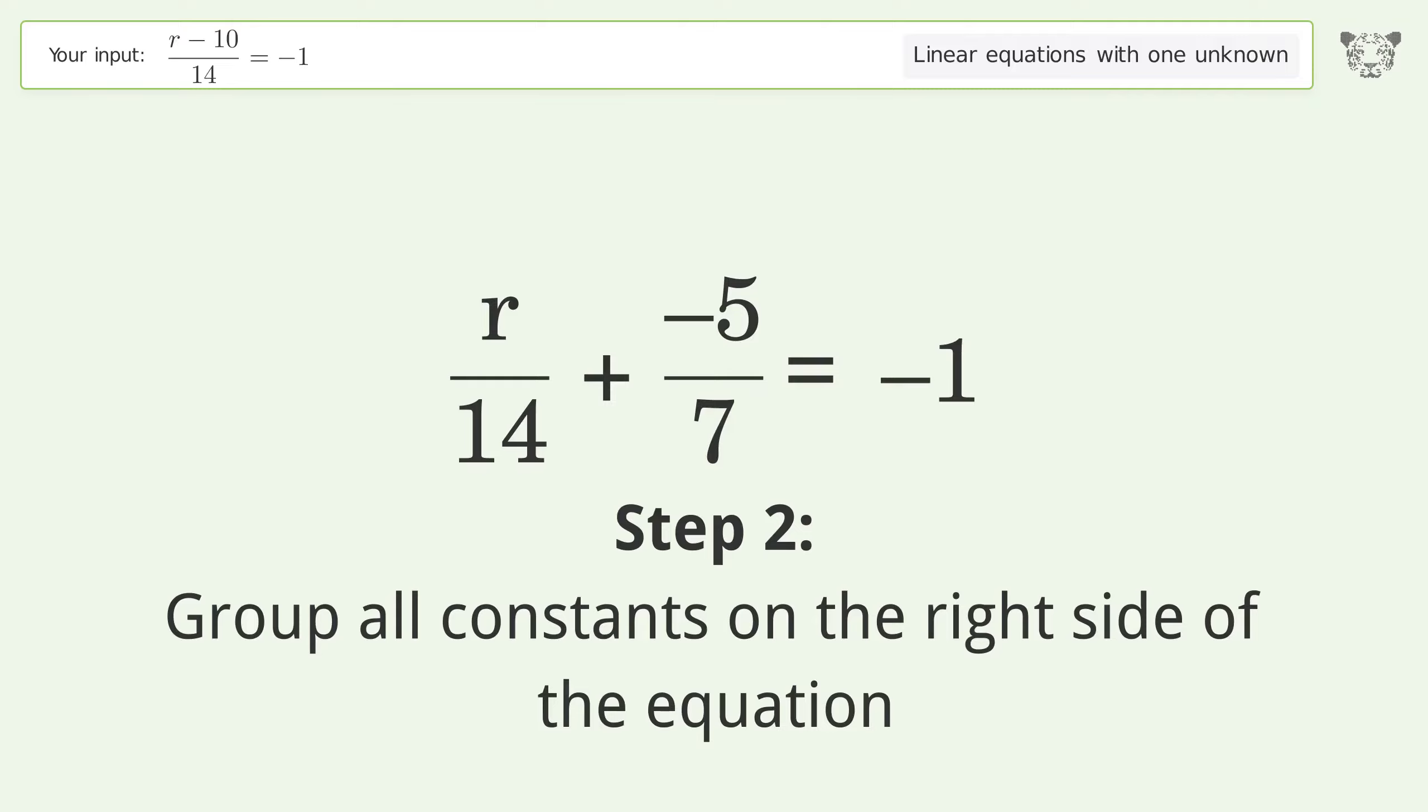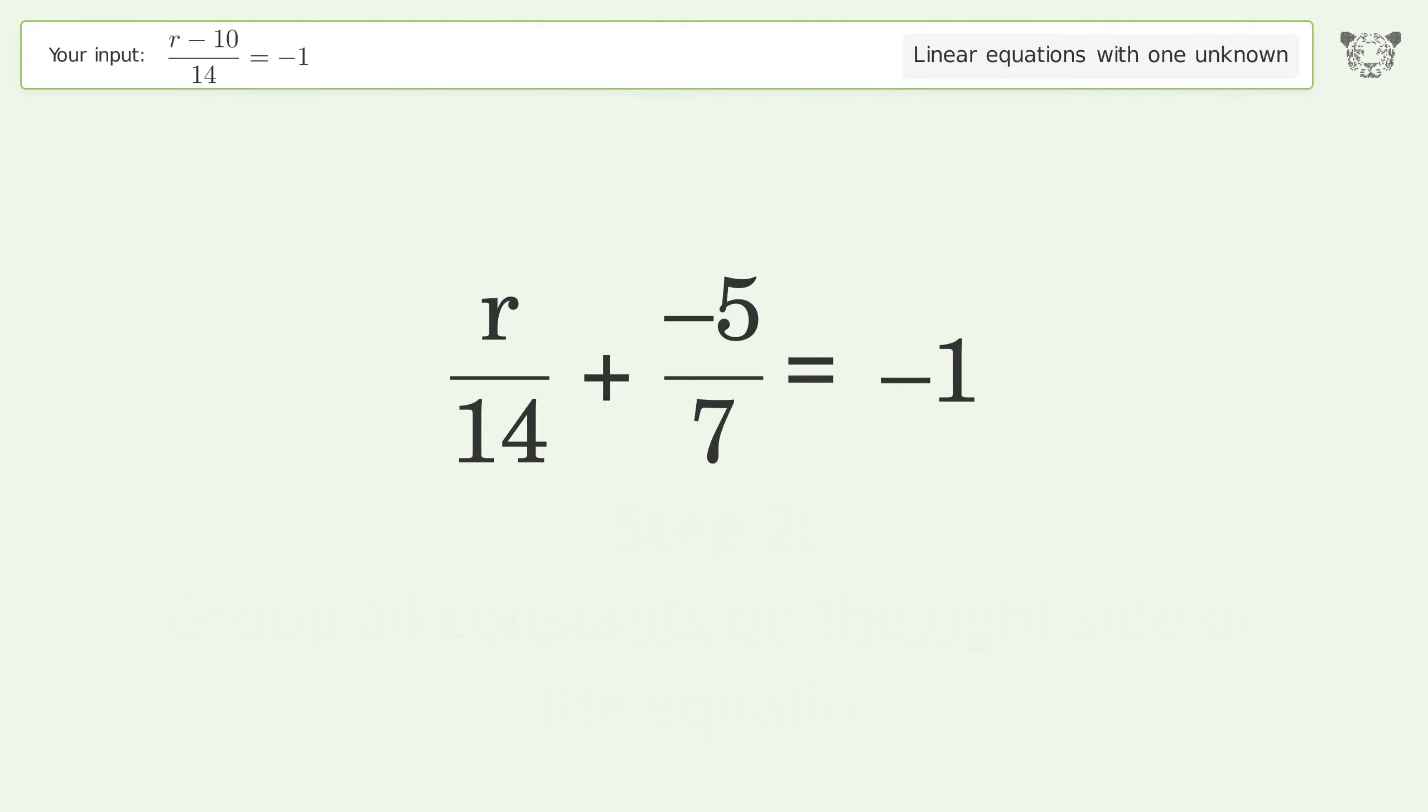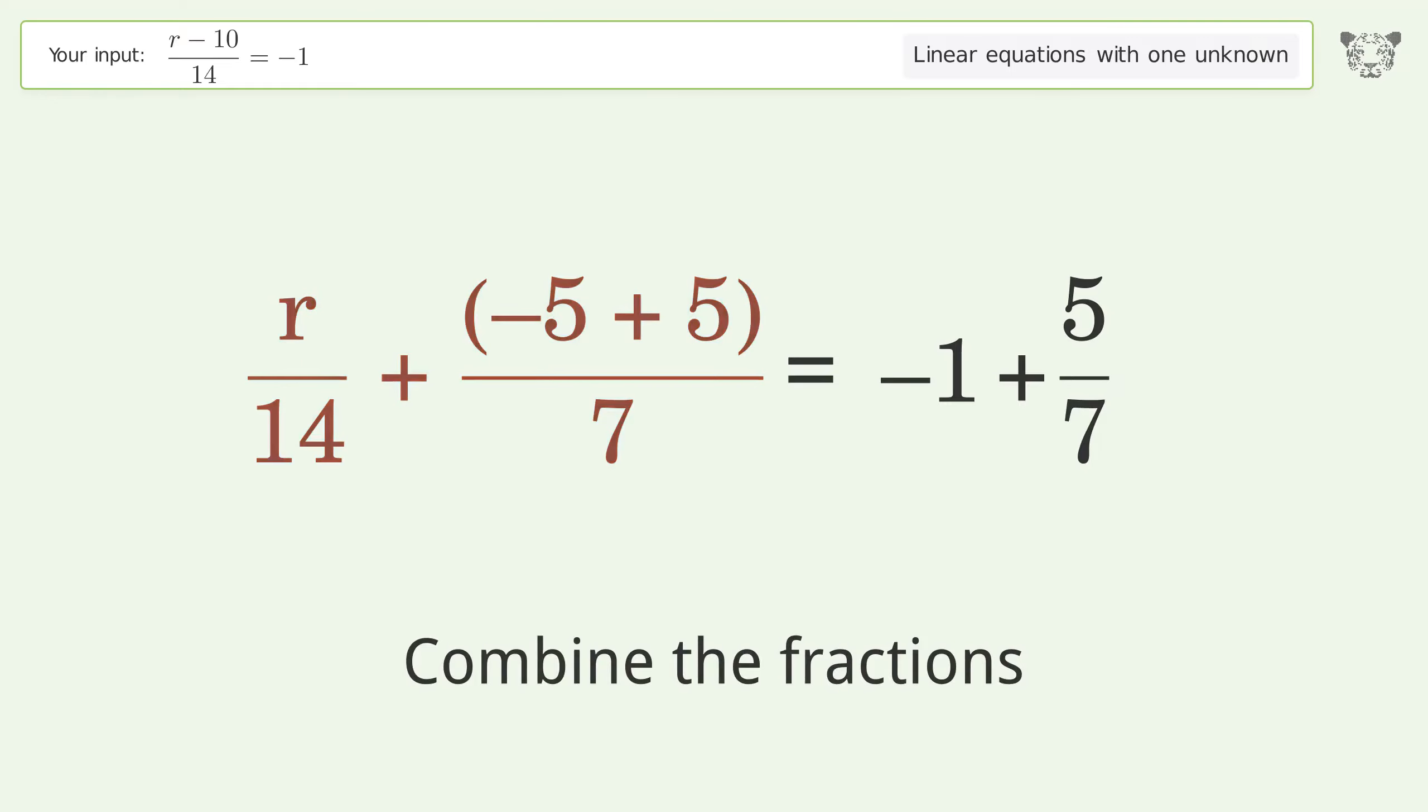Group all constants on the right side of the equation. Add 5/7 to both sides. Combine the fractions. Combine the numerators.